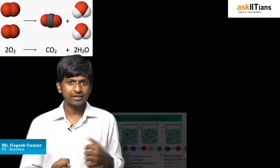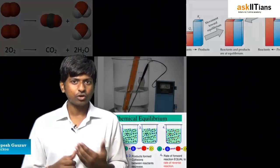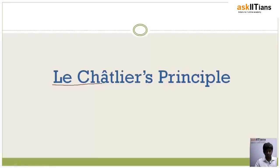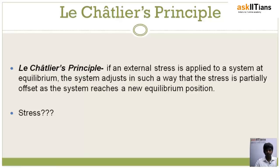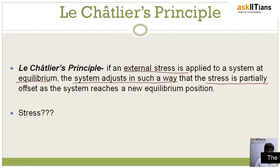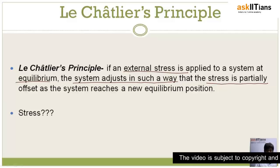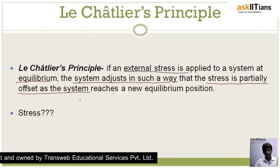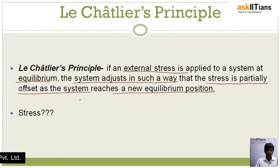Hello students, welcome back. Let's begin with the final segment of our topic of chemical equilibrium: the Le Chatelier's Principle. Le Chatelier's Principle states that on application of an external stress to a system which is in equilibrium, the system will adjust itself in such a way that the stress is partially offset, and an entirely new equilibrium will be reached.